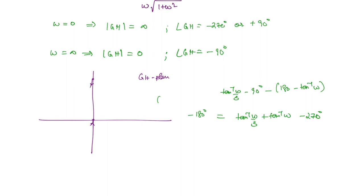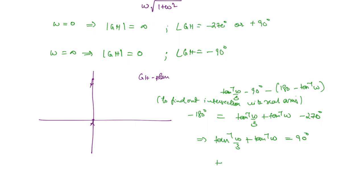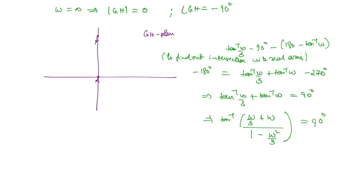To find the intersection with the real axis, we set tan⁻¹(ω/3) + tan⁻¹(ω) = 90 degrees. Using the addition formula, this gives tan⁻¹[(ω/3 + ω) / (1 − ω²/3)] = 90 degrees. For tan⁻¹ of something to be 90 degrees, the denominator must be zero, so 1 − ω²/3 = 0, giving ω = √3. The Nyquist plot intersects the negative real axis when ω = √3.